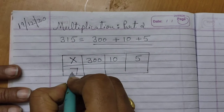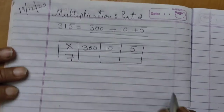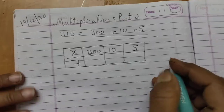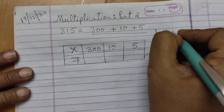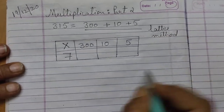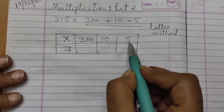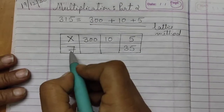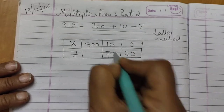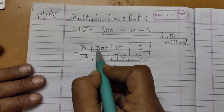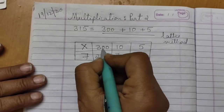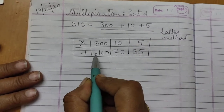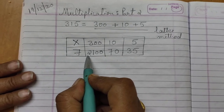And here we are multiplying by 7. So, this method is called the lattice method. Now, 7 fives are how much? 7 fives are 35. 7 tens are 70. 7 threes are 21. You will write here 21, and these two zeros you will write below. So, 7 multiplied by 300 is 2100.